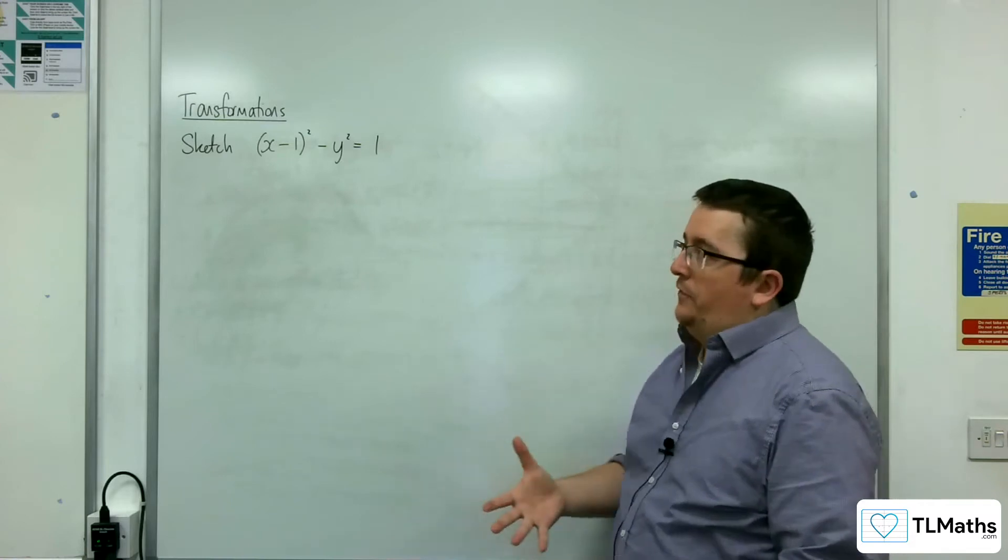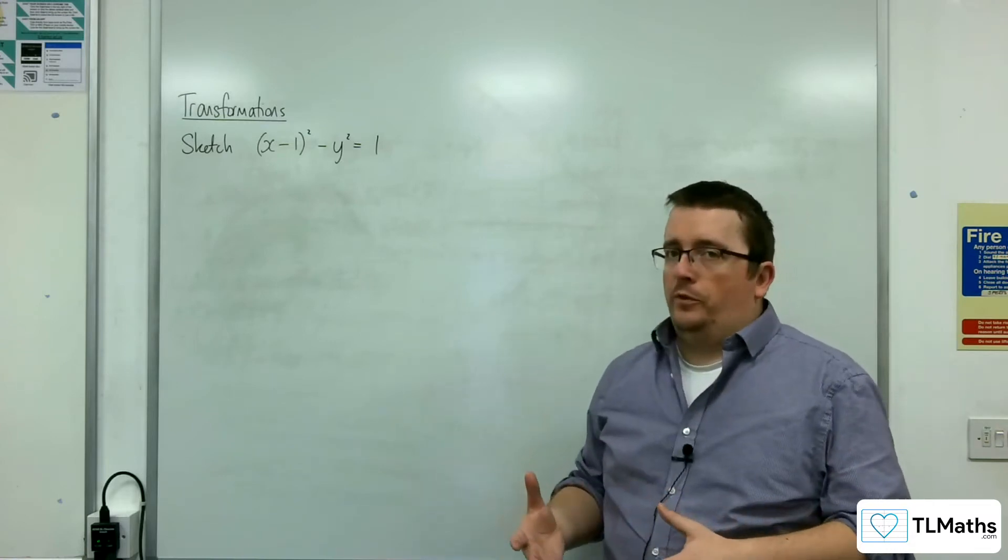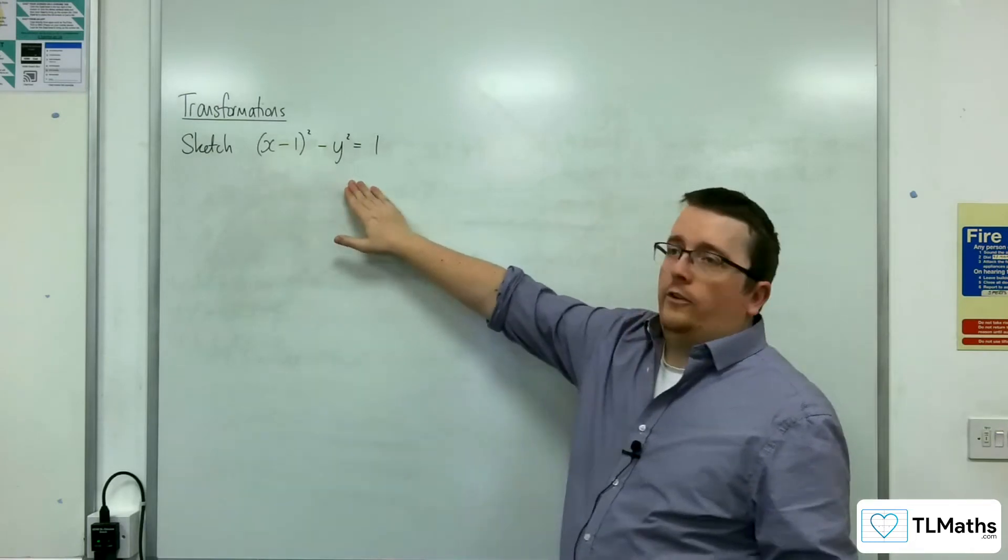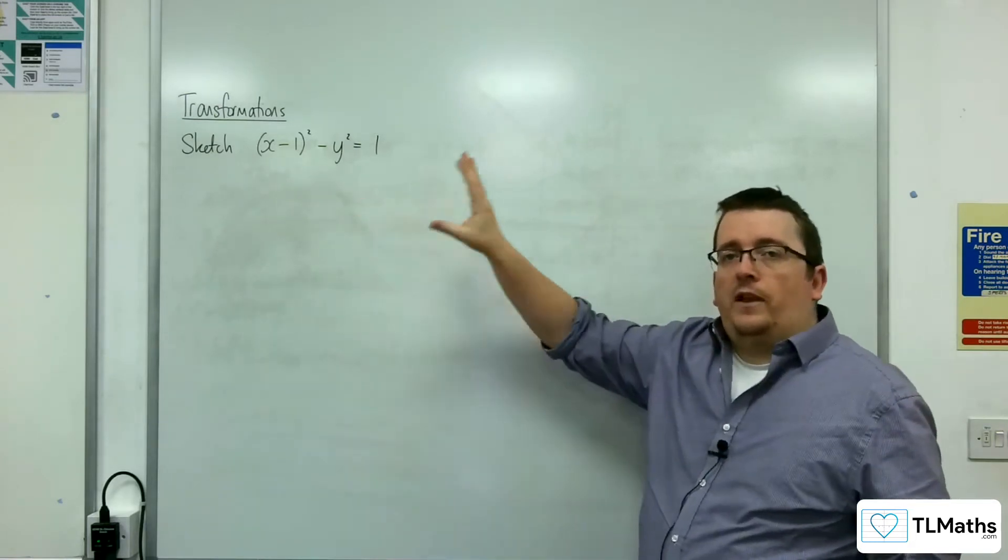First thing to do is to identify what type of graph that we're talking about. So because you've got an x squared and take away a y squared, this is a hyperbola.